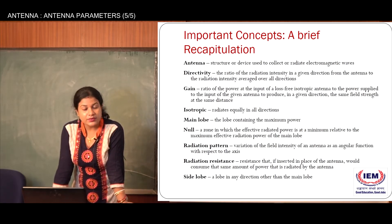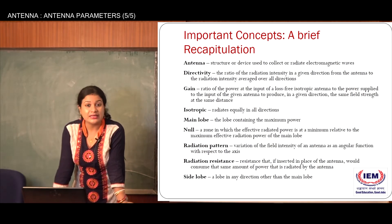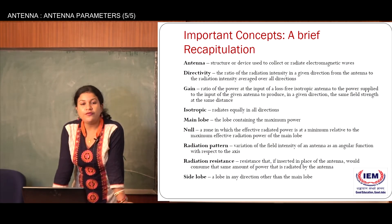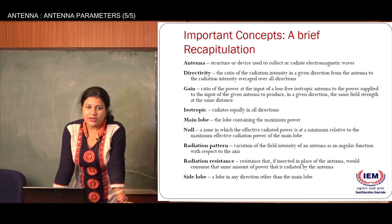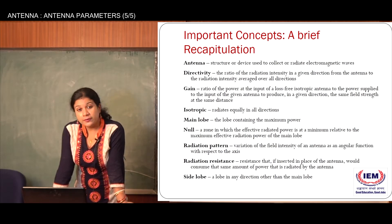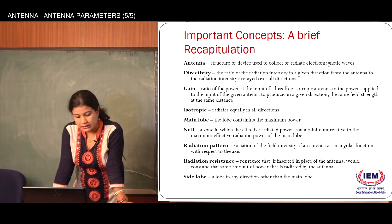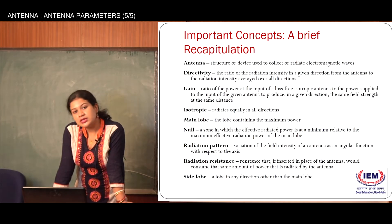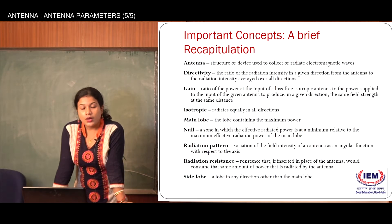The first parameter we discussed is directivity and gain. Directivity is of prime importance whenever we talk about antenna design. We defined directivity as the capability of the antenna to concentrate power in a particular direction — specifically, the ratio of the radiation intensity in a given direction from the antenna to the radiation intensity averaged over all directions.